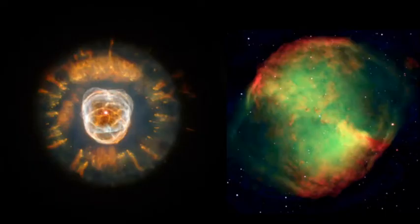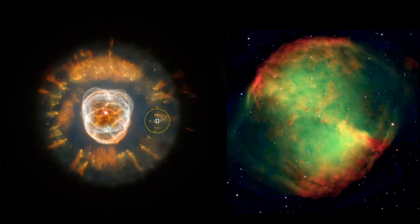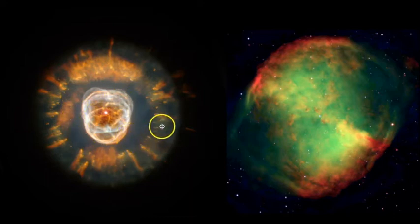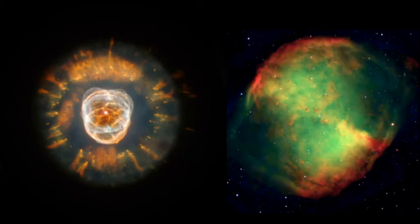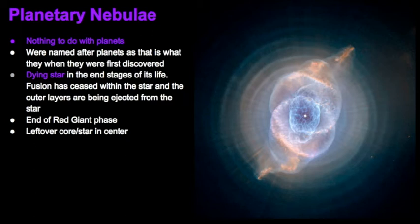The Eskimo Nebula in Gemini looks like an Eskimo with its hood up. Then there's the Dumbbell Nebula in Vulpecula, known as the Fox. And the Cat's Eye Nebula is found in Draco the Dragon — all beautiful examples of planetary nebulae.